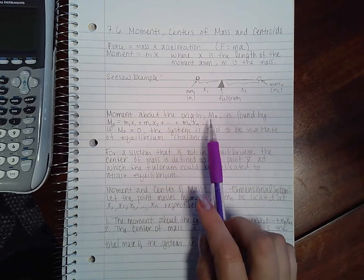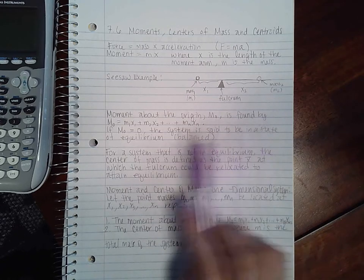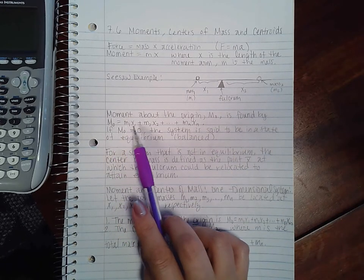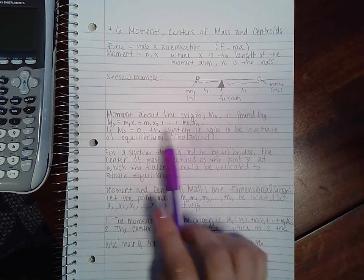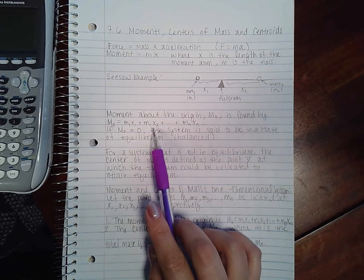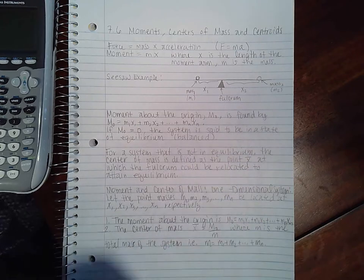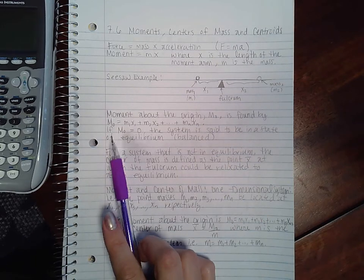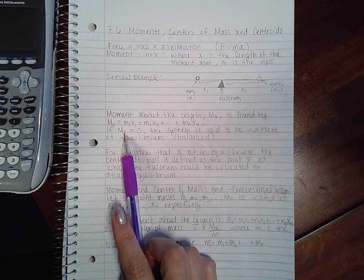The moment about the origin, m sub zero, is found by finding all of the moments - each mass times its moment arm - and then sum those all together.